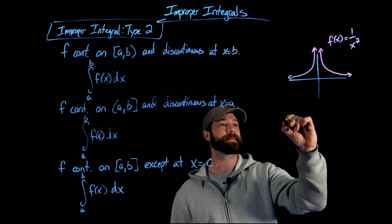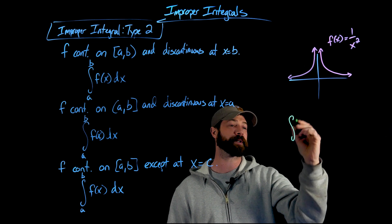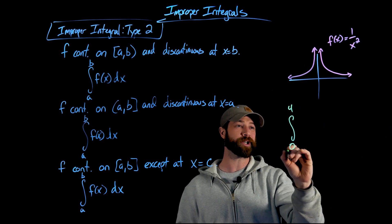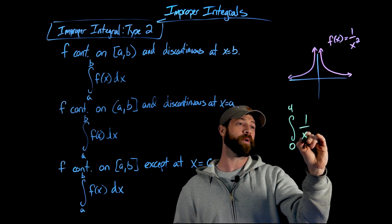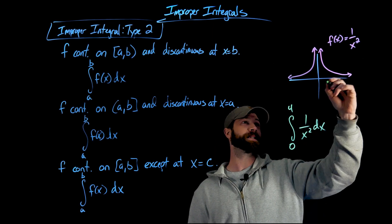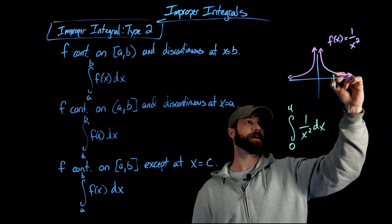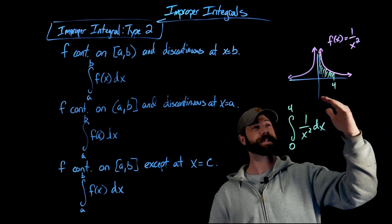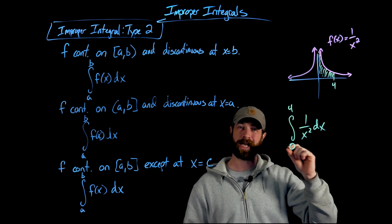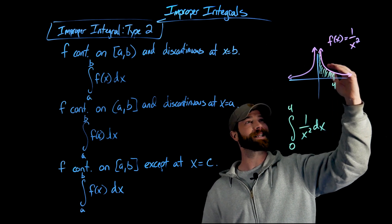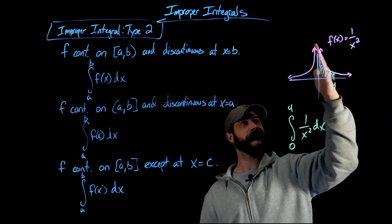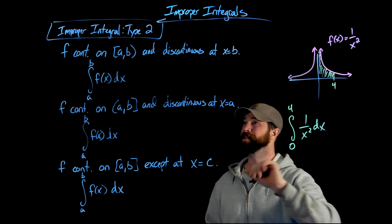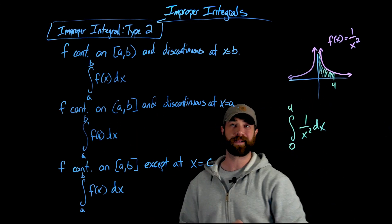Specifically, let's consider this integral: from 0 to 4 of 1/x² dx. What that would represent is whether we can define this area. What you'll notice is that, just as with the other type of improper integrals, as we go to zero, this function actually never reaches x = 0. So this would be of this type — an improper integral.